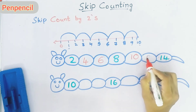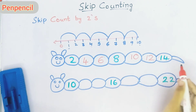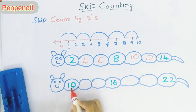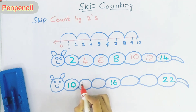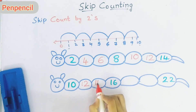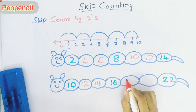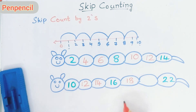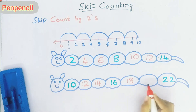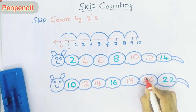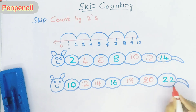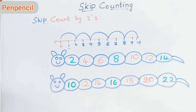Now one more. In this set the first number is ten. The next number after ten is twelve. Then 14, and 16 is already given. After 16, we skip 17 and write 18. After 18, we skip 19 and write 20. After 20, 22 is already given.